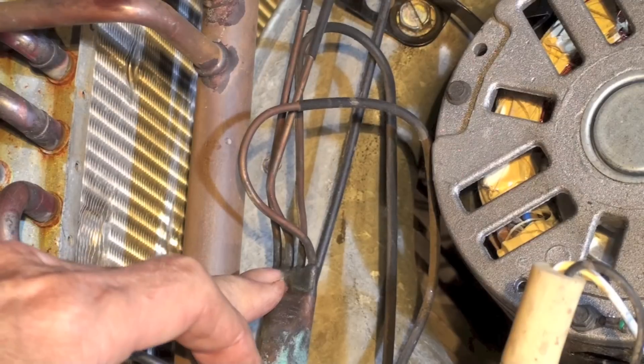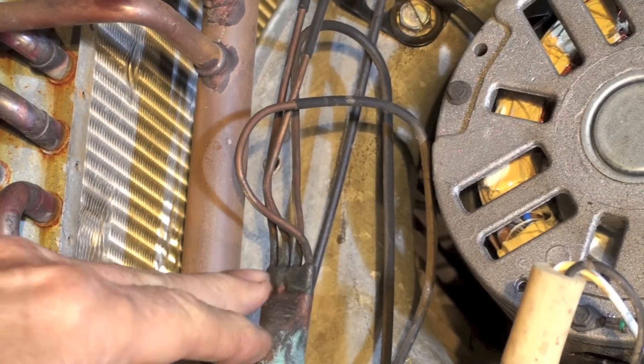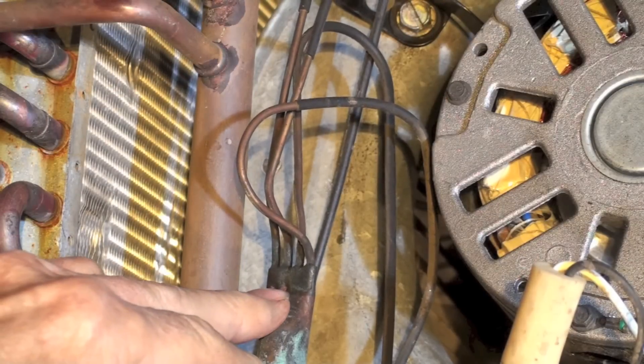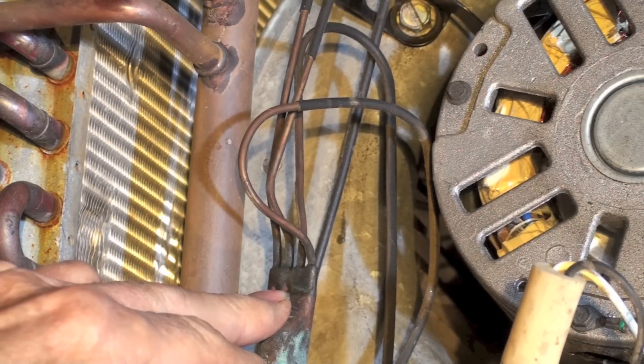You see these four lines. These are not distribution tubes as I showed you in another video. These are actually cap tubes and they're feeding each one of the coils in here.